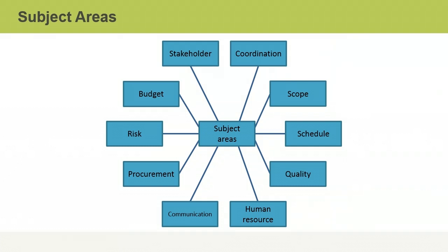There is a tenth area called coordination which, as the name suggests, is the coordination of the other nine areas. The coordination area is the responsibility of the project manager and project team. This subject area is constantly called upon throughout the project as the project manager oversees the big picture and how the other subject areas can impact one another. The goal of coordination is to make sure all of the other subject areas work cohesively toward project success.